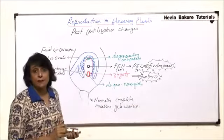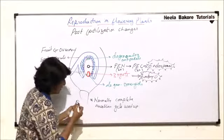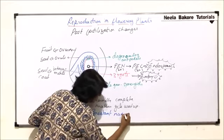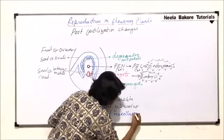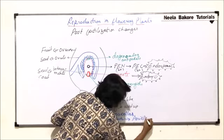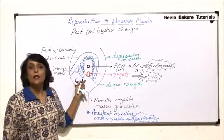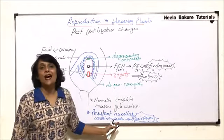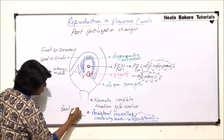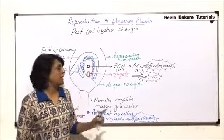Normally, the complete nucellar tissue gets used up. But sometimes, even after formation of a complete seed, some nucellar tissue still remains. Seeds with persistent nucellar tissue are called perispermic seeds. Examples are the seeds of beetroot and black pepper — these seeds are perispermic seeds.